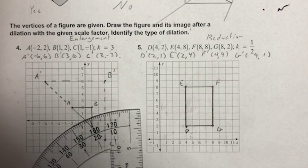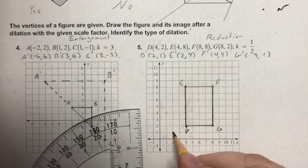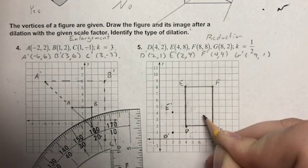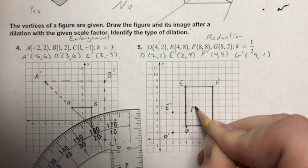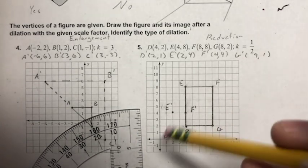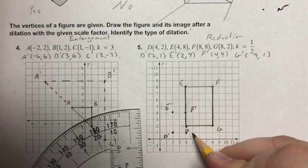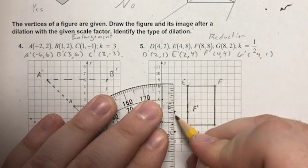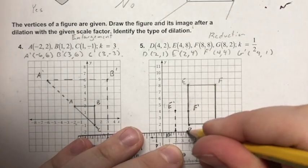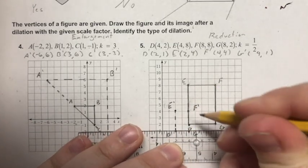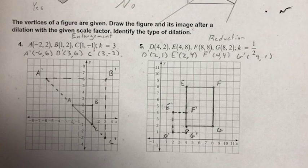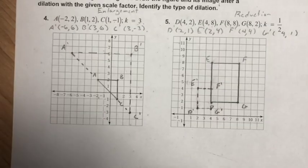Plotting the image: D′ at (2, 1), E′ at (2, 4), F′ at (4, 4), G′ at (4, 1). Connecting them with a dotted line shows the reduced rectangle. The points are getting a bit crisscrossed on screen, but the result is clear: I've done a reduction — this was my original and it reduced to a smaller size.